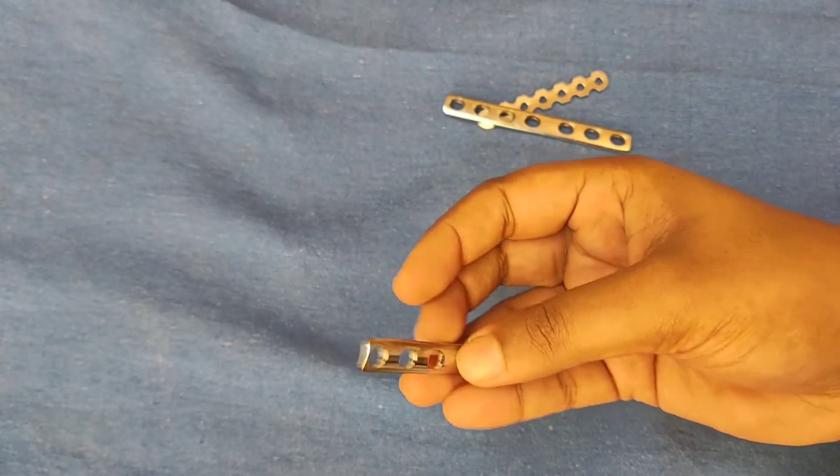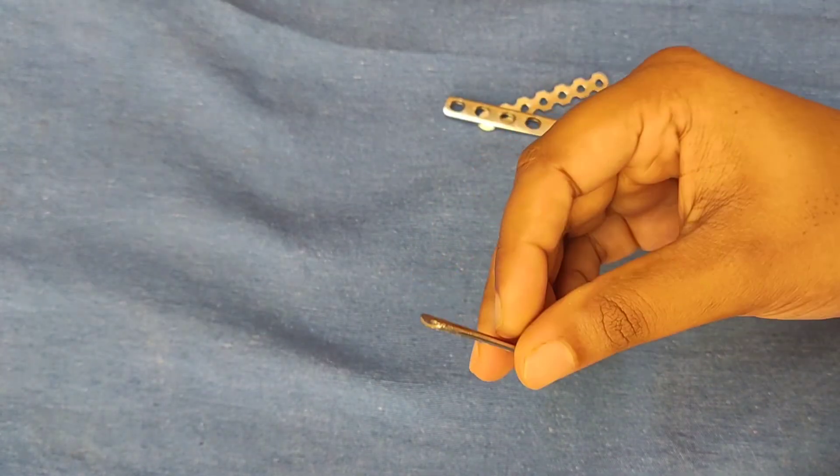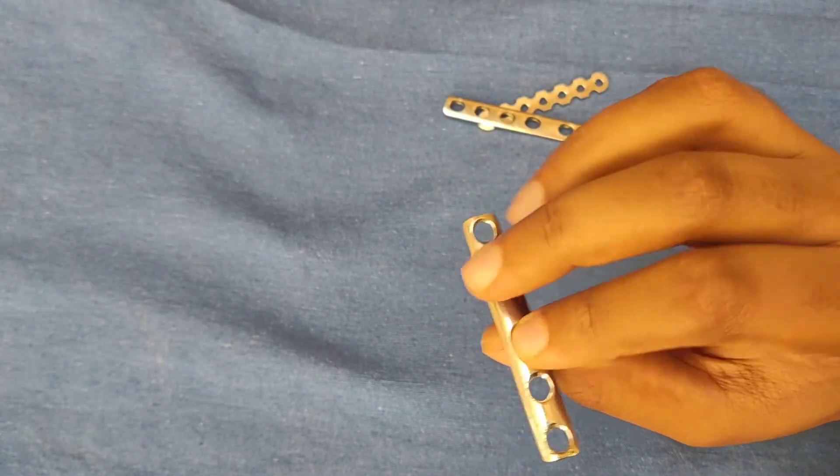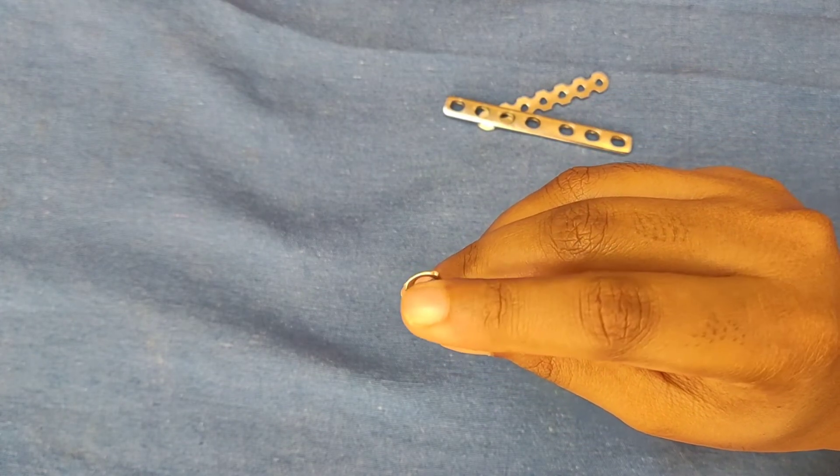Quarter tubular means one fourth of circumference of a cylinder. One third means one third of circumference of a cylinder. Semi tubular means half of circumference. One third tubular plates are mainly used for fracture fibula fixation.